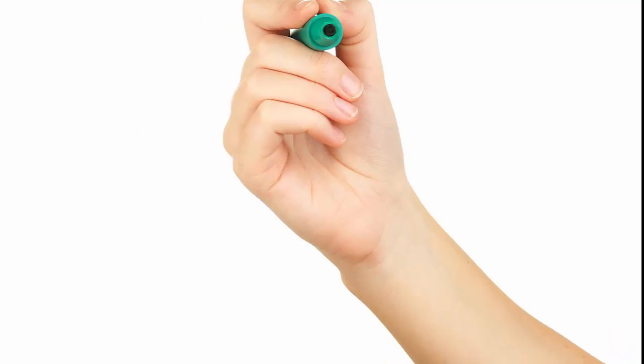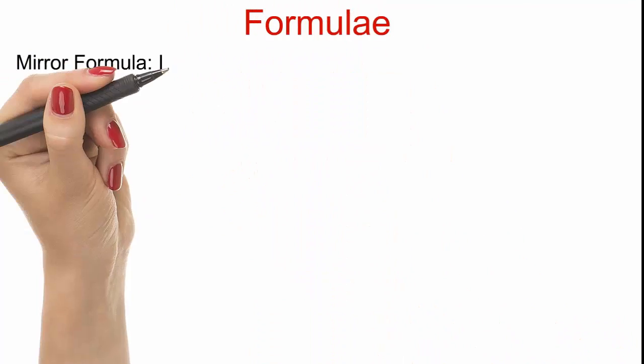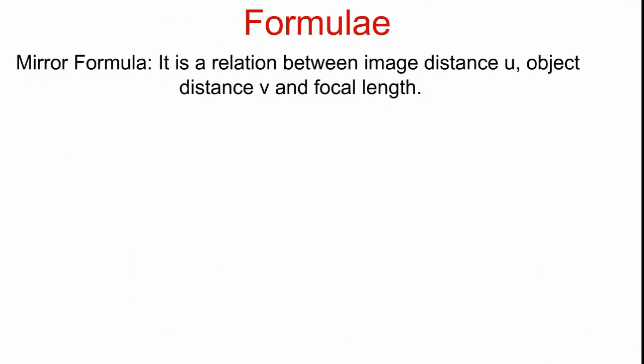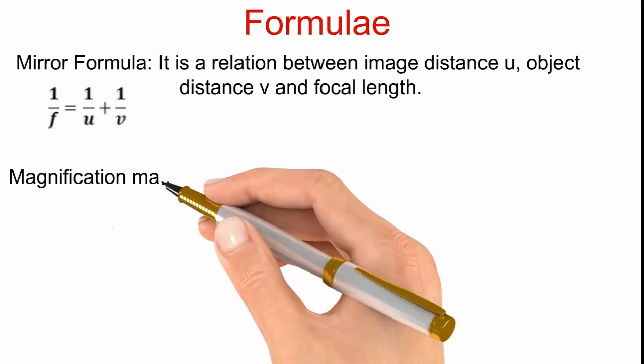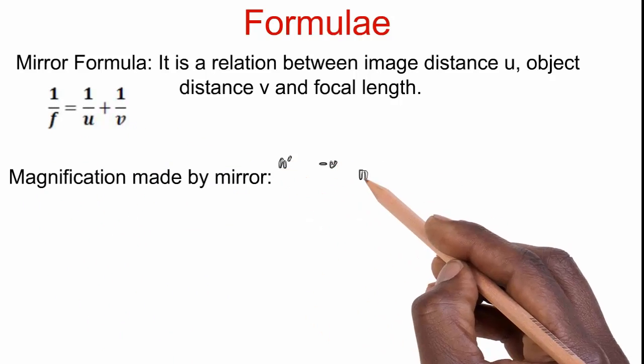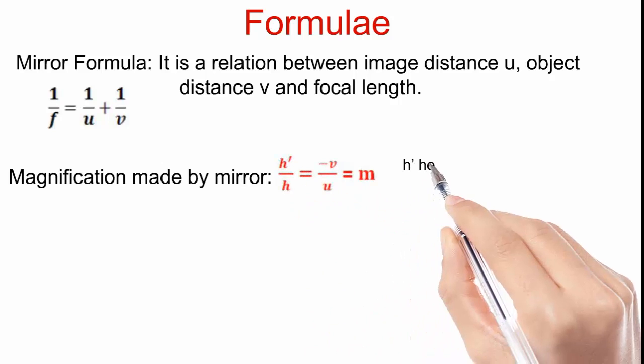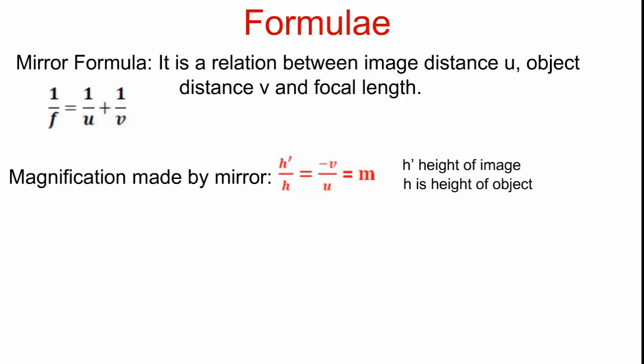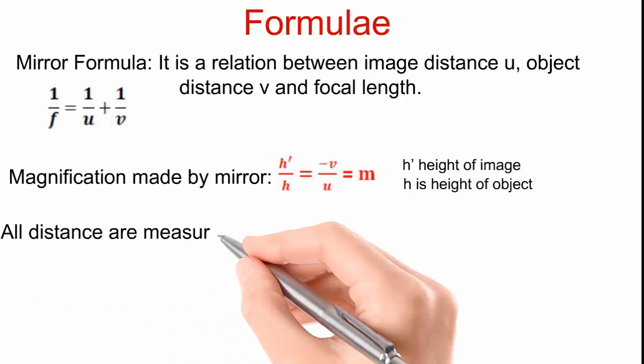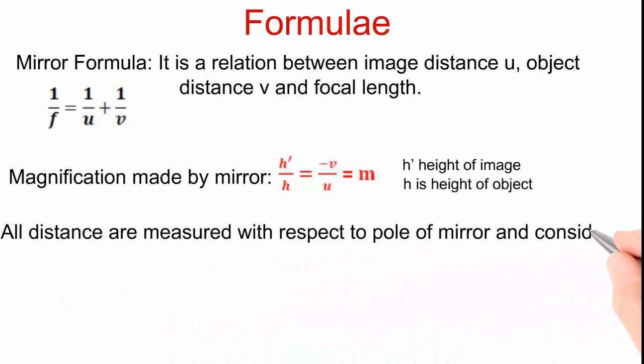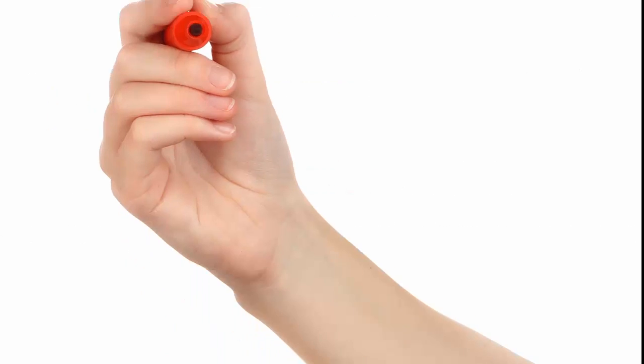It is mirror formula. It is a relation between image distance u, object distance v, and focal length f. You can see 1 by f equal to 1 by u plus 1 by v. Also, magnification made by mirror is given by minus v by u. All distances are measured with respect to pole of mirror and considering sign conventions. You can easily understand that object distance is always negative as object is always in front of mirror.